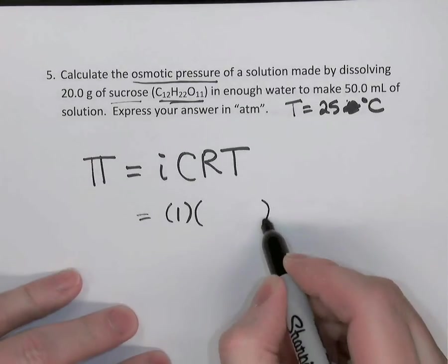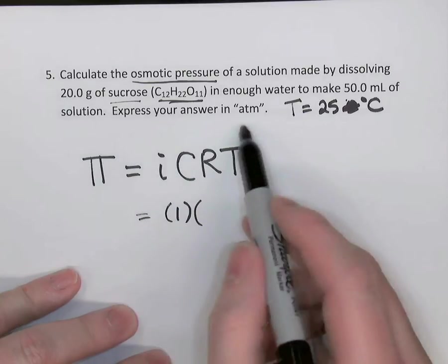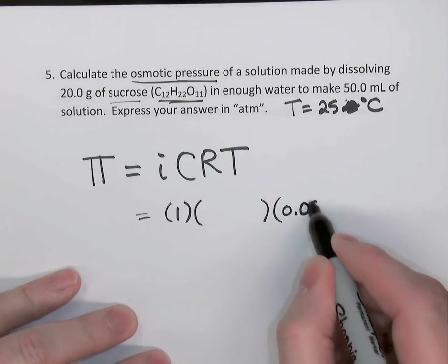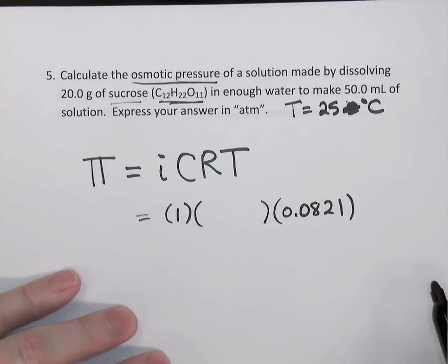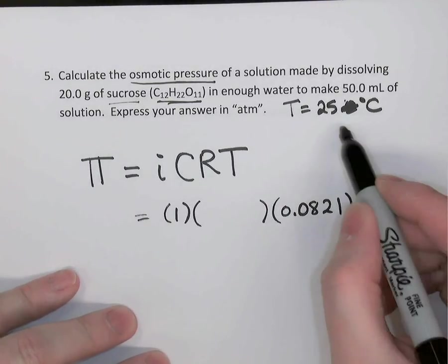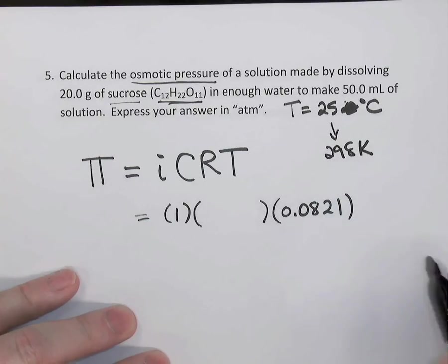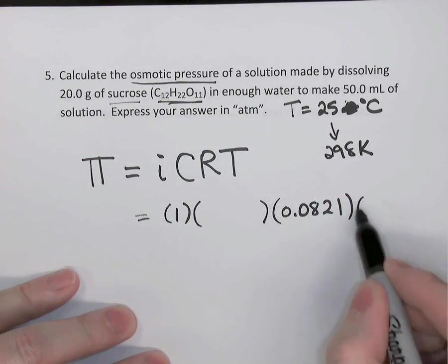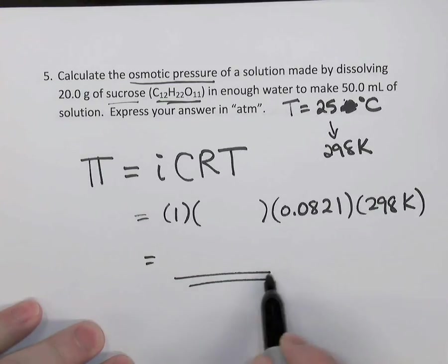We need to know the molarity, which we'll calculate in just a moment. It says express the answer for pressure in atmospheres. So let's use 0.0821 as our value for the ideal gas constant. And 25 degrees Celsius, 298 Kelvin, when we add 273 to that. So to find the osmotic pressure, all we need to know is the concentration. So let's go find that.